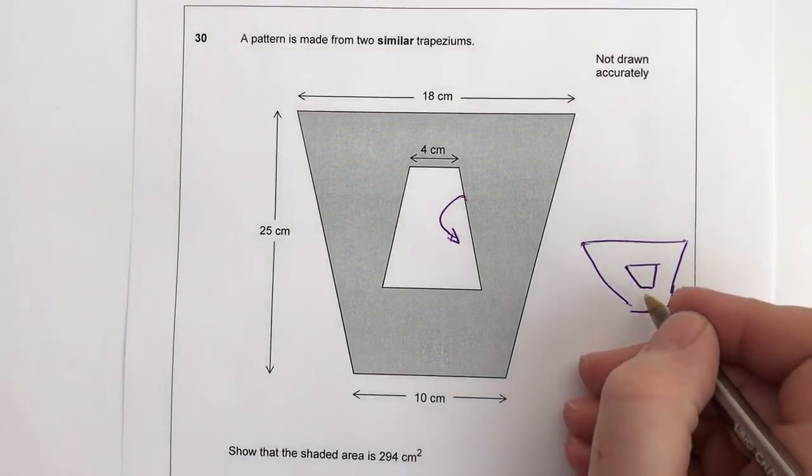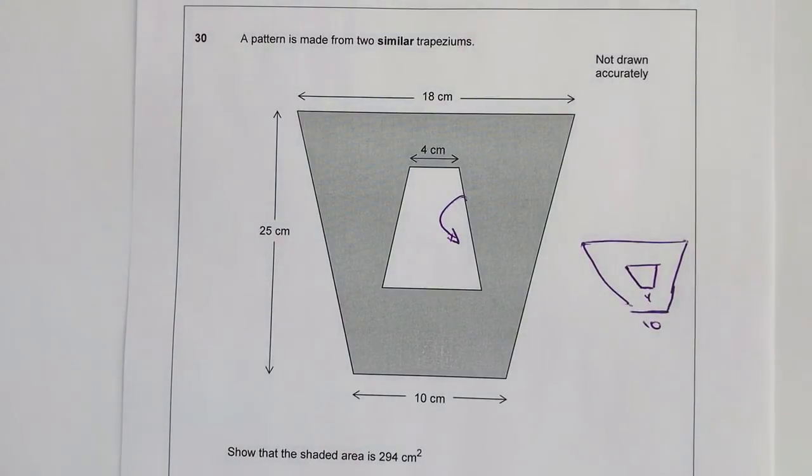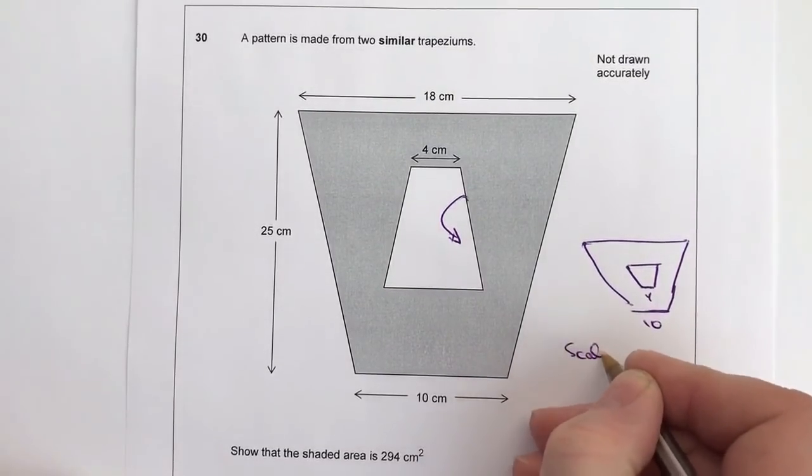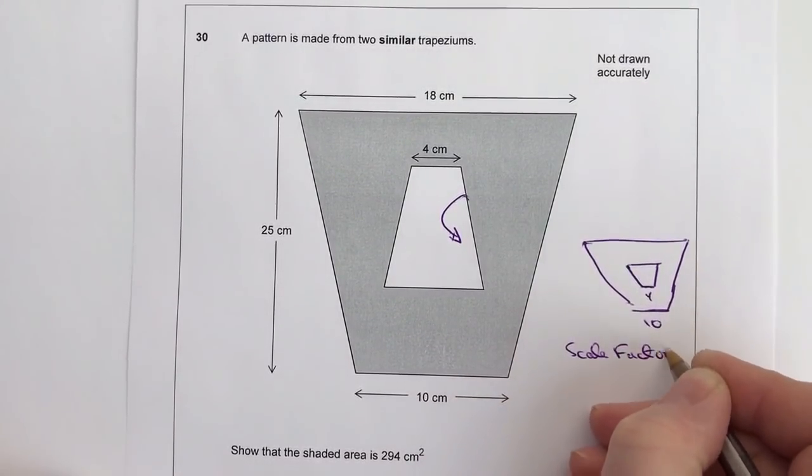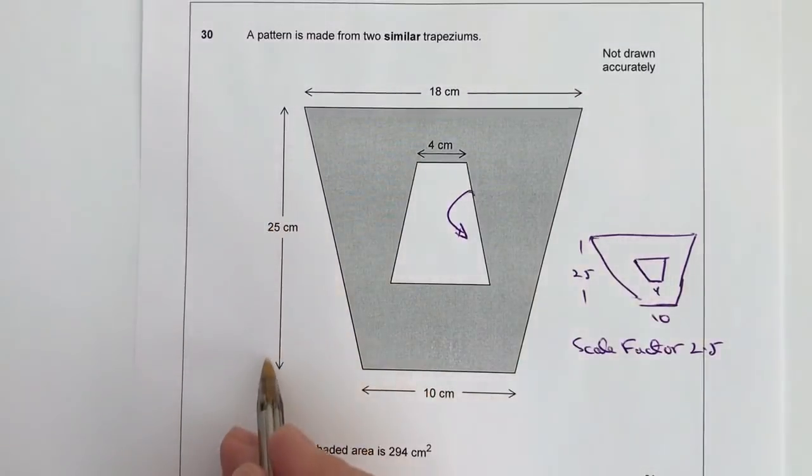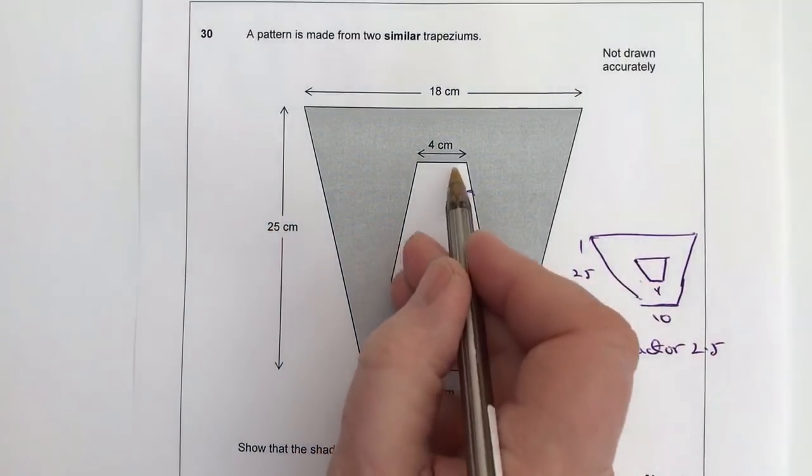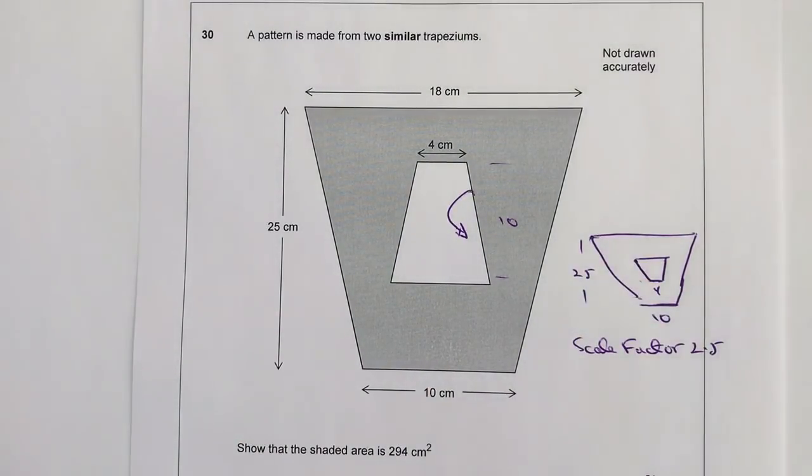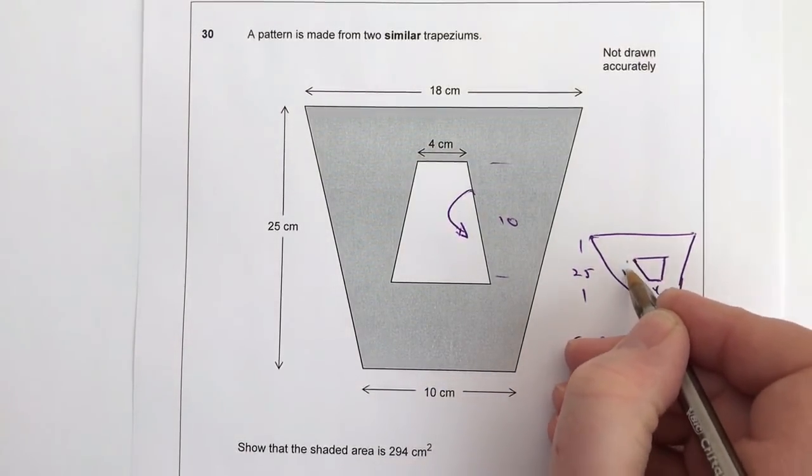So what we're saying is that this is 4 and this is 10. So in other words, the scale factor, the amount of times I've multiplied this 4 by to get to 10, the scale factor is equal to 2.5, because 2.5 times 4 is going to be 10. Now I can then apply that with all the other measurements. So I know this overall measurement is 25, which is this one here. And then the measurements of this little bit here, which is the same as this, is going to be 10, because 25 divided by 2.5 means that this will be 10.